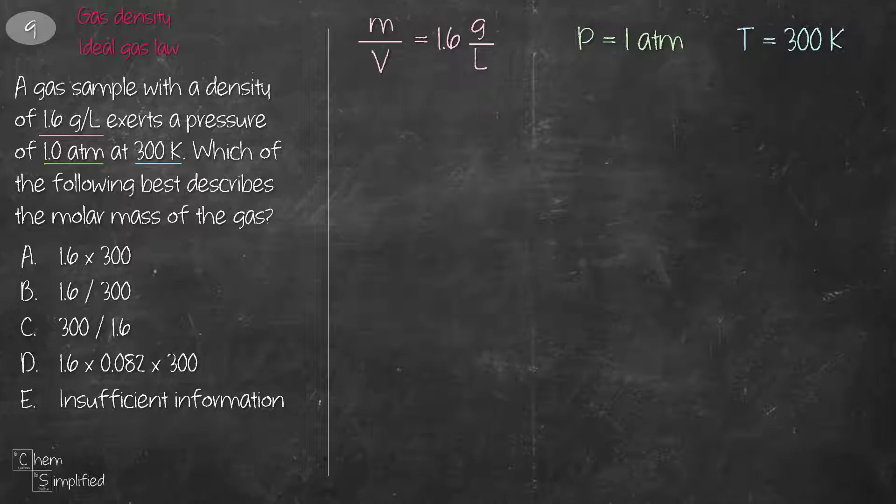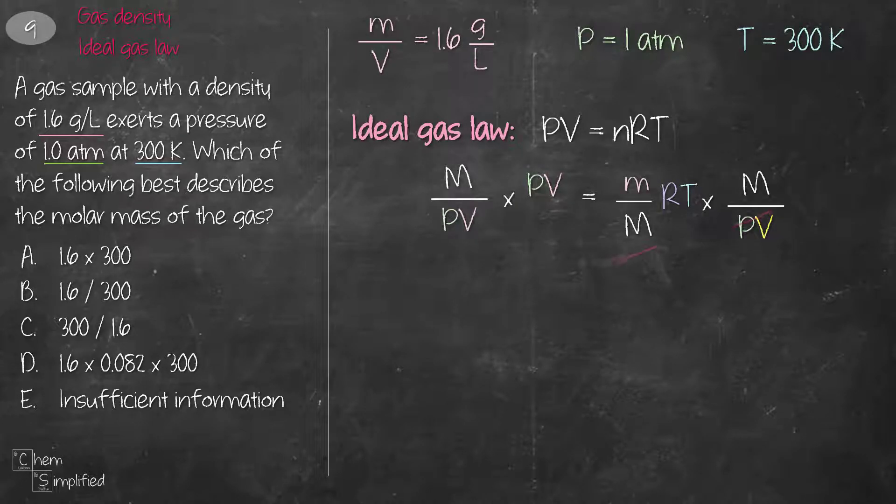We're going to use ideal gas law to help us solve this problem because we only have one set of data. So PV equals nRT. We know that moles can be obtained by taking the mass divided by the molar mass. So we're going to substitute that into our equation. We do a little bit of algebra so that we can solve for capital M, which is the molar mass. And that gives us m over V times RT over P.